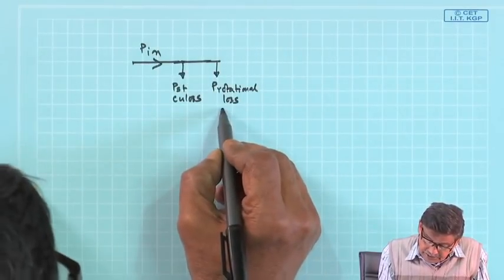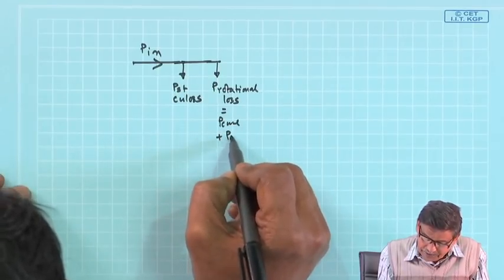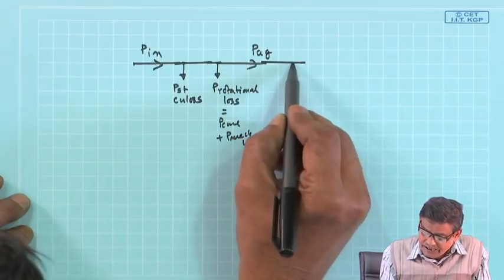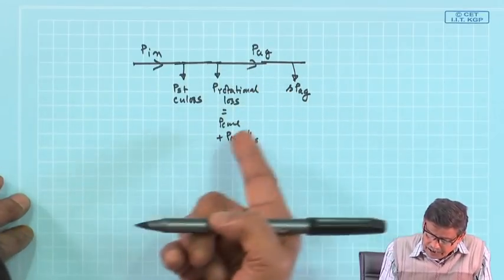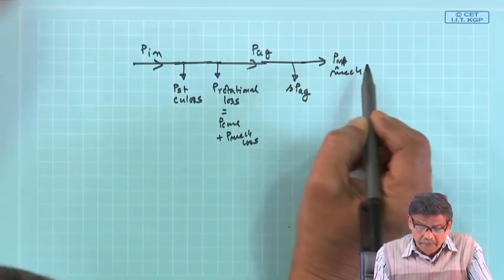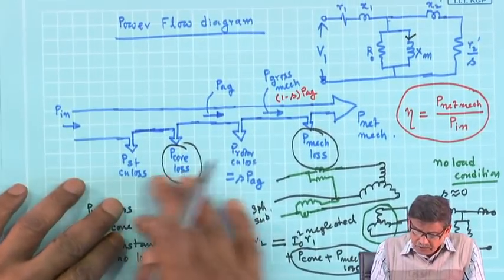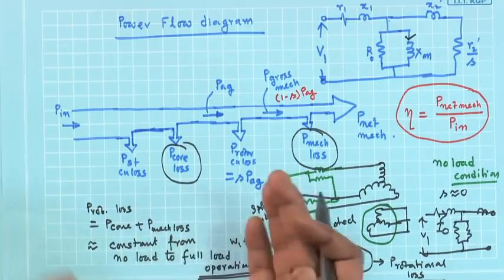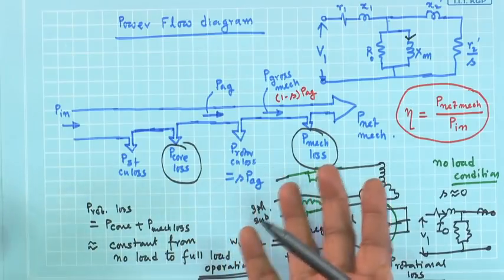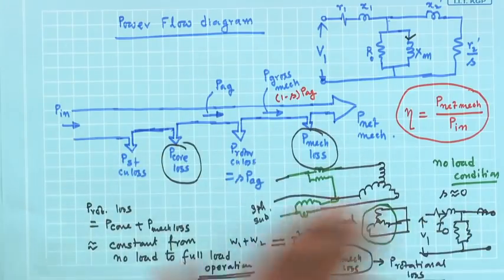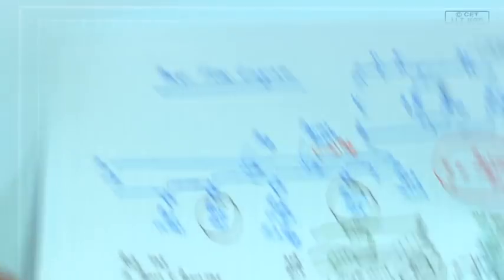In a simplified power flow diagram, some people write: Pin minus stator copper loss, then subtract rotational loss right at the input, then subtract S·PAG as rotor copper loss, giving P net mechanical directly. This introduces a small approximation, but the logic is clear depending on the problem at hand.